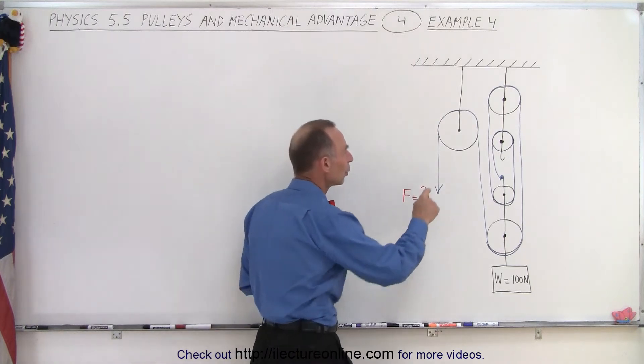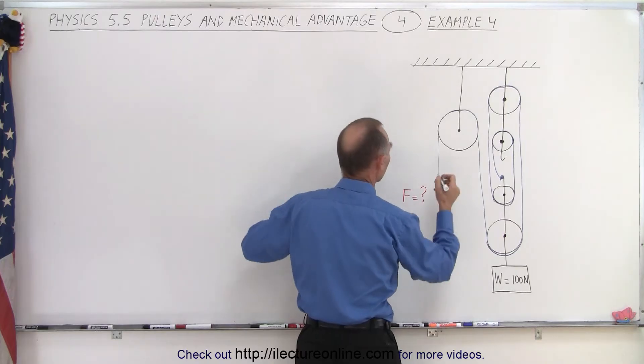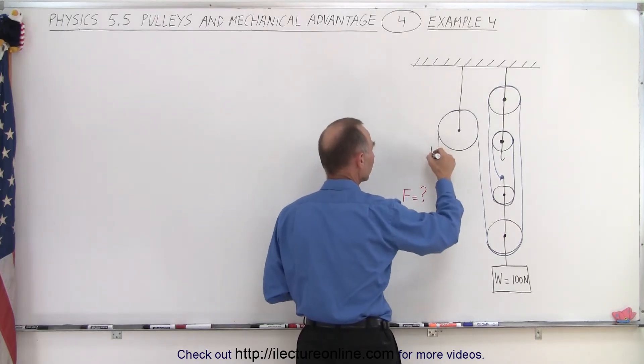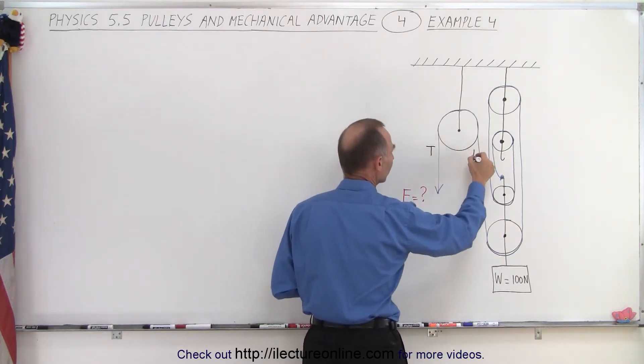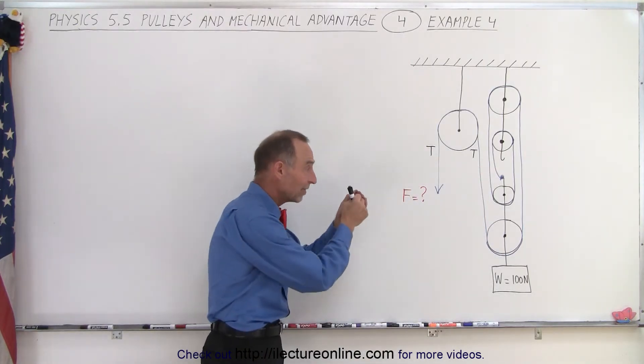And if that's the case we know that the tension on both sides of this pulley must be the same. So if we call the tension on this string right here T, that means the tension on the other side must be T as well. Now another condition we need to keep in mind is either we have it static, we don't make it move at all, or we move it at a constant speed, there's no acceleration.